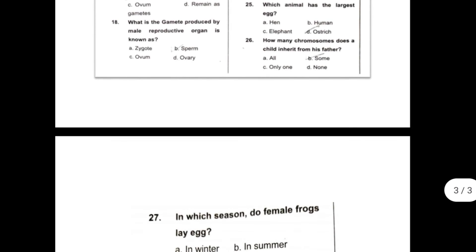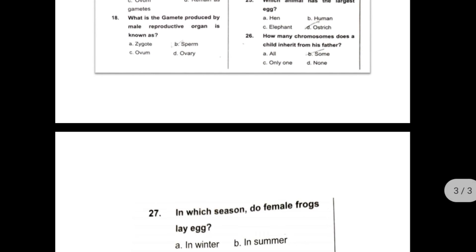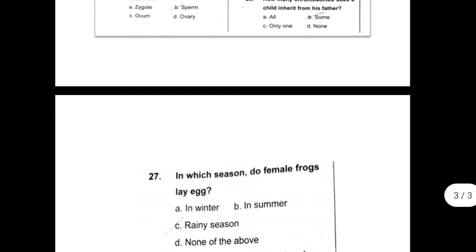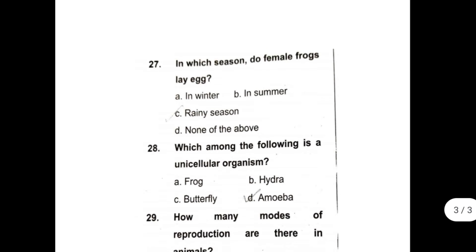Twenty-five, which animal has the largest egg? The answer is ostrich. Twenty-sixth, how many chromosomes does a child inherit from his father? The answer is some.